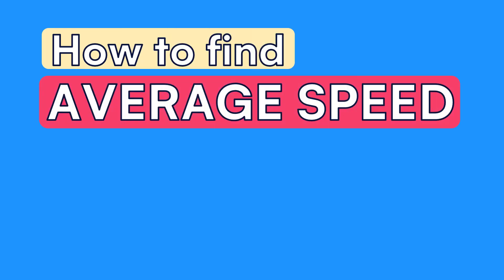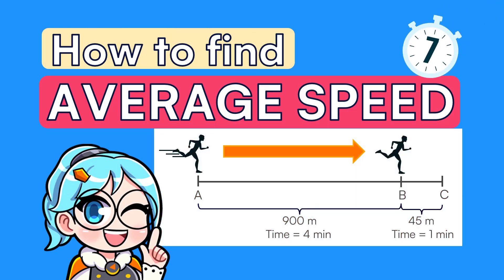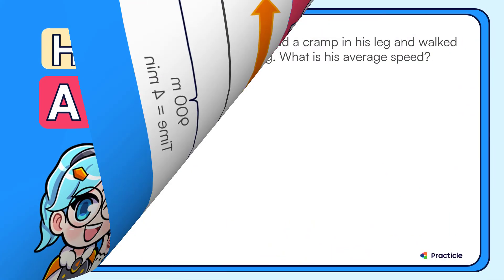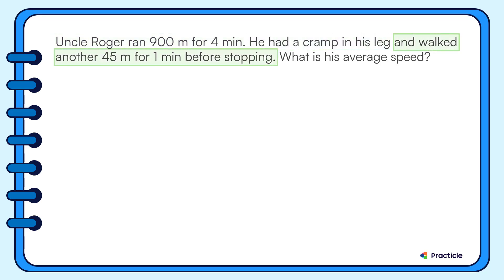Need to find the average speed for the whole journey? Let's learn how to do that in this practical math video. Let's read the word problem that we have. Uncle Roger ran 900 meters for 4 minutes. He had a cramp in his leg and walked another 45 meters for 1 minute before stopping. What is his average speed?